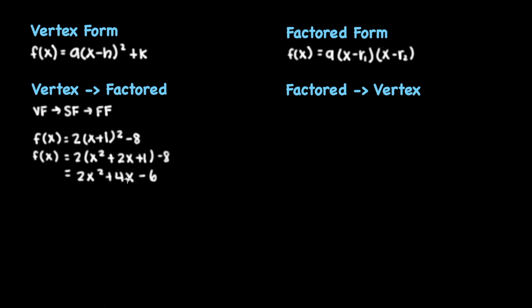Now to get to factored form, you simply factor, which means that we can factor out this GCF of 2 first to get 2(x² + 2x - 3). Now you can factor this further to get 2(x + 3)(x - 1), and that is how you get from vertex form to factored form.